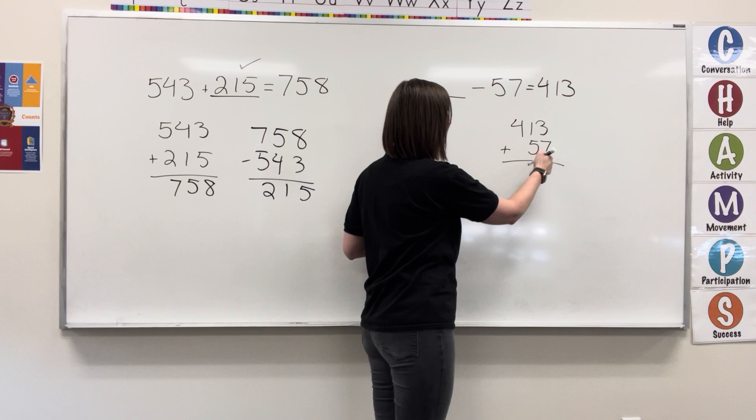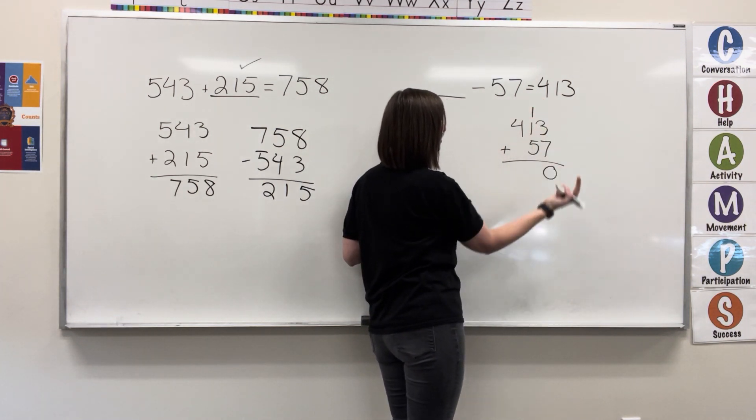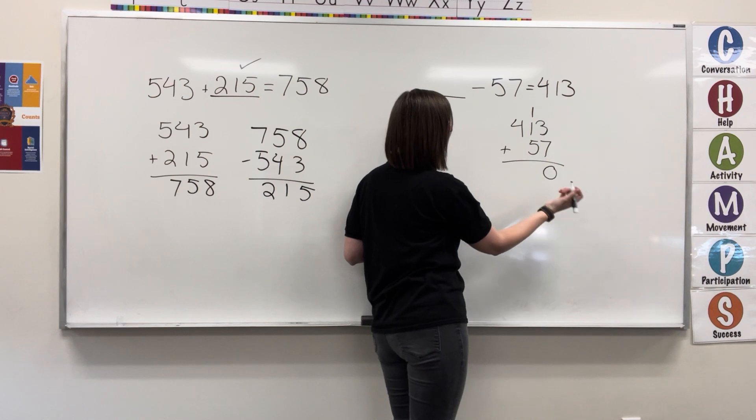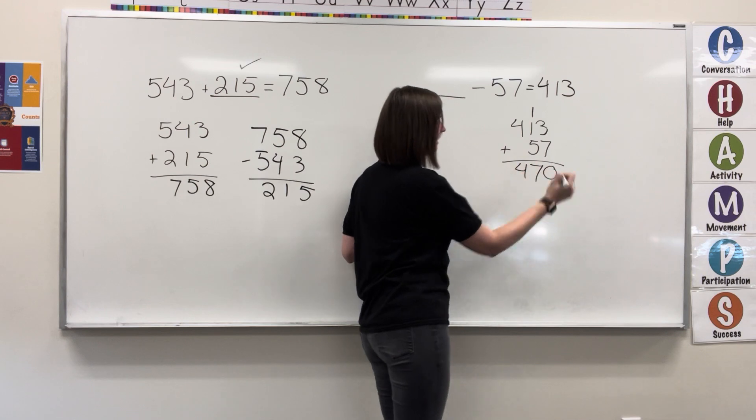So 3 plus 7 equals 10. Write the 0, carry the 1. 1 plus 1 equals 2, plus 5 equals 7. Write the 7. 4 plus nothing equals 4. Write the 4.